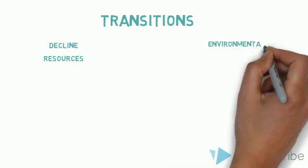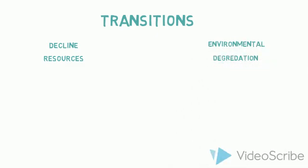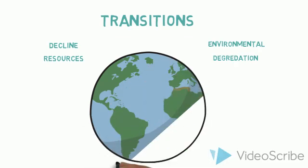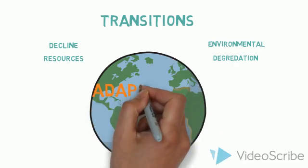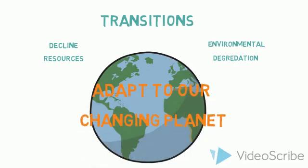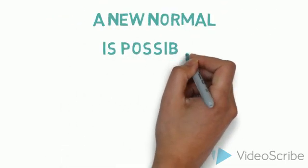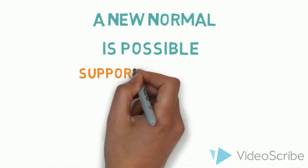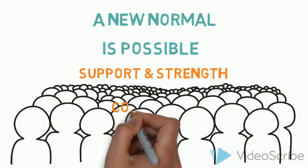As the world transitions toward a future marked by the decline of resources and concern over environmental degradation, communities like Gusing provide us with examples of how we can successfully adapt to our changing planet. The case of Gusing reminds us that adaptation to a new normal is possible with the combined support and strength of a community.